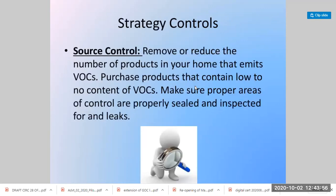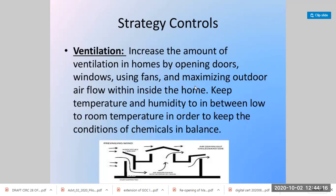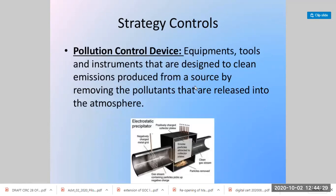Long-term effects of styrene include eye, nose, and throat irritation, headaches, cancer, leukemia, and liver and kidney damage. To control volatile organic compounds, you should remove or reduce their consumption by purchasing products with low or no VOC concentration. Ventilation is also important — using fans, allowing outdoor airflow, mechanical ventilation, and keeping temperature and humidity in control. Scrubbers, pollution control devices, and filters can also prevent these compounds from entering the atmosphere.